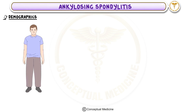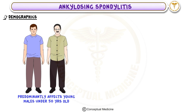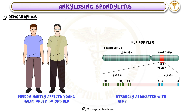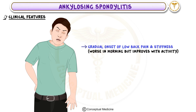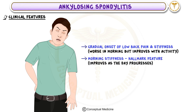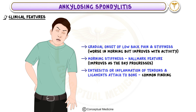Ankylosing spondylitis predominantly affects young males under 50 years old and is strongly associated with the genetic marker HLA-B27. The clinical presentation includes gradual onset of low back pain and stiffness, often worse in the morning but improving with activity. Morning stiffness is a hallmark feature. Enthesitis — inflammation at sites where tendons and ligaments attach to bone — is another common finding.